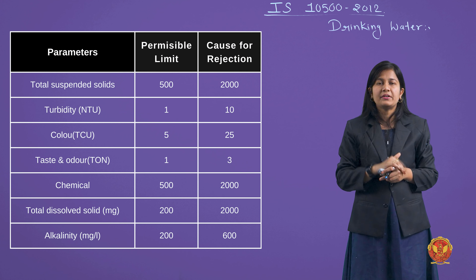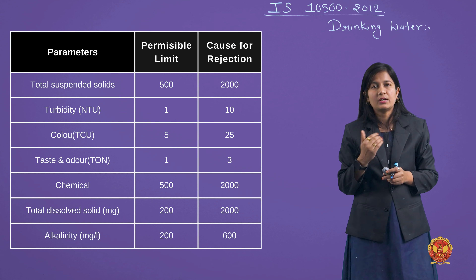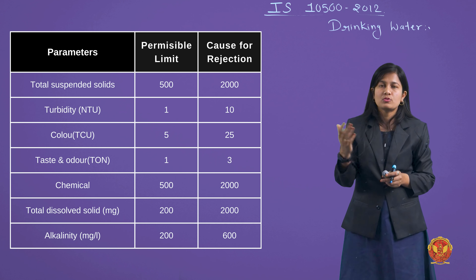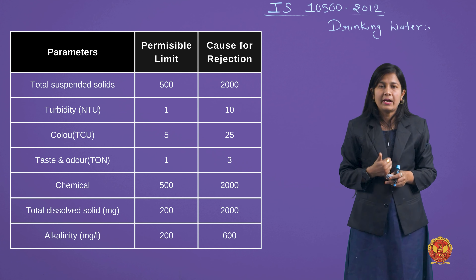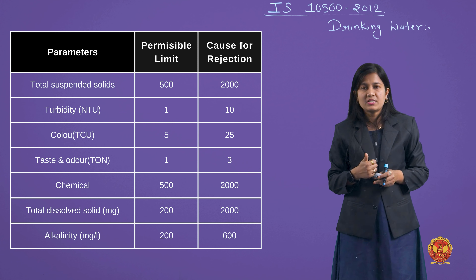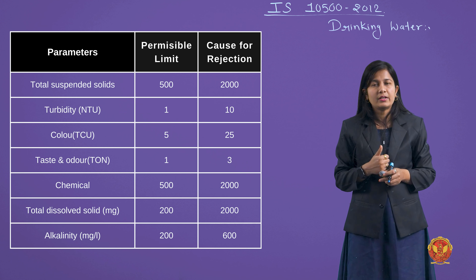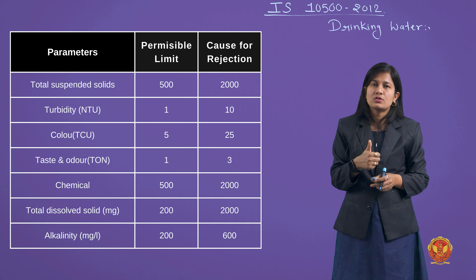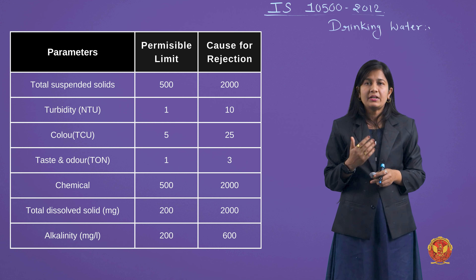The first permissible limit is about total solids. Total solids की permissible limit Indian standard के according 500 PPM होती है, and cause for rejection 2000 PPM होता है। अगर total solids 2000 PPM से ज्यादा हो जाएं तो उस पानी को reject कर देंगे। Turbidity को NTU (Nephelometric Turbidity Unit) में calculate करते हैं — permissible limit 1 NTU, cause of rejection 10 PPM। Color को tintometer से TCU (True Color Unit) में measure करते हैं — permissible limit 5 TCU, cause of rejection 25 TCU।